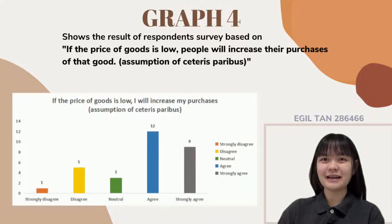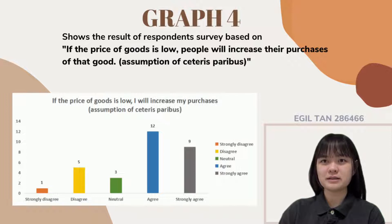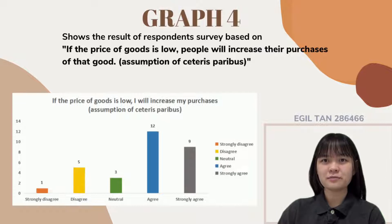Graph 4 shows respondents' survey results based on: 'if the price of goods is low, people will increase their purchases.' The majority — 12 out of 30 respondents — agree that they will increase their purchases if the price is low. In economics, quantity demanded increases when the price decreases, so the price of a good and the quantity demanded have an inverse relationship. Hence, the majority of respondents are willing to purchase goods at a lower price.